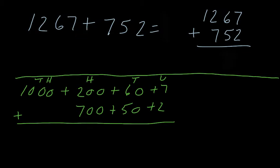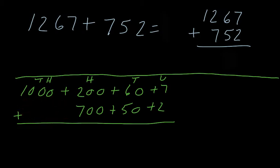When you are partitioning numbers — for example, 1267 being added to 762 — the number 762 does not have anything in the thousands column, so you don't write anything there. You leave it empty and write the seven hundred in the hundreds column as you would normally.